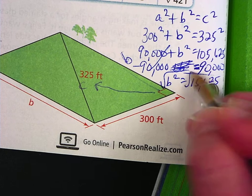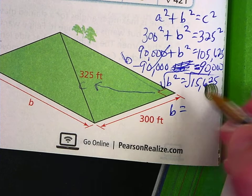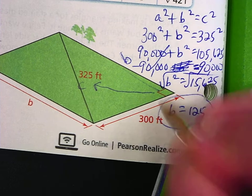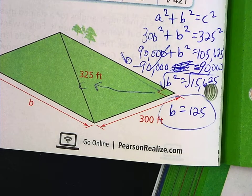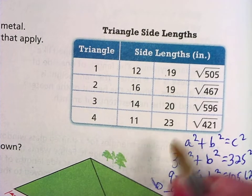And then we're going to square root both sides. So the square root of B squared is B. And the square root of 15,625 is 125. And that is the length of this side of that plot of land. I'm going to solve just one more for you that involve a square root.